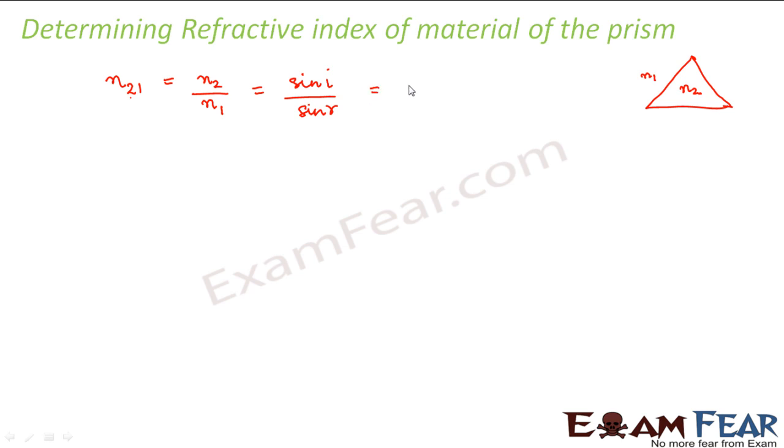Now what is this i? Now just in the previous slides we calculated that angle of incidence is equal to angle of prism plus angle of minimum deviation divided by 2. So this divided by sin r.